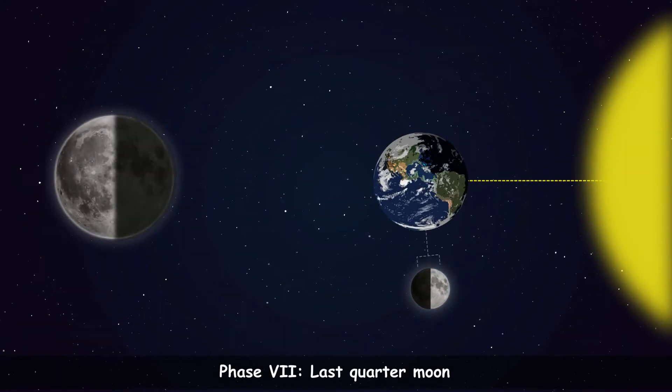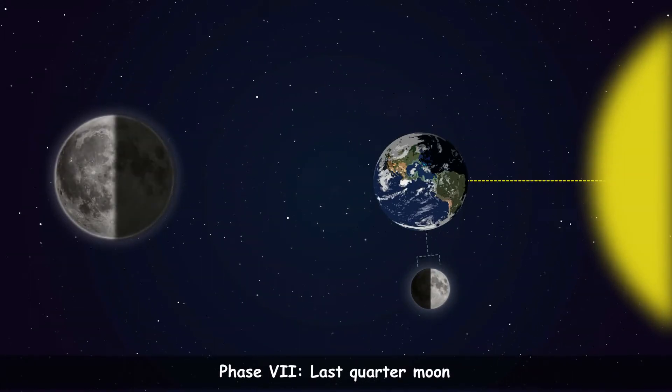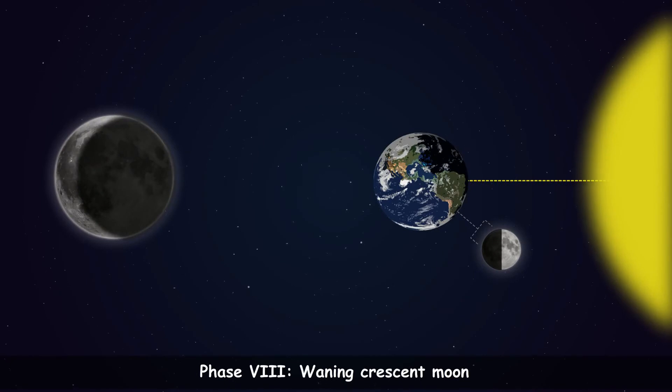Phase 7 is the Last Quarter. The moon appears half lit again. Phase 8 is the Waning Crescent Moon. This is the last phase before the next new moon.